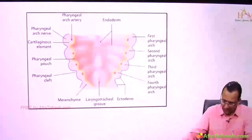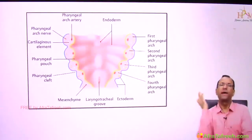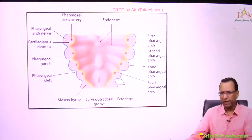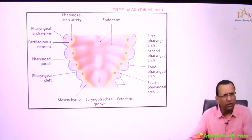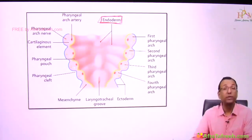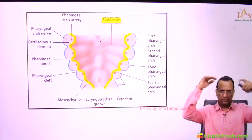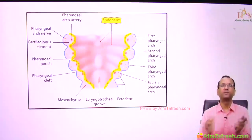This is the front view of the pharynx — you are looking at the floor of the pharynx, lined by endoderm. The pharynx is the upper part of the gut tube and is lined by endoderm. You can see pouch 1, 2, 3, and 4 on the lateral wall, all lined by endoderm.